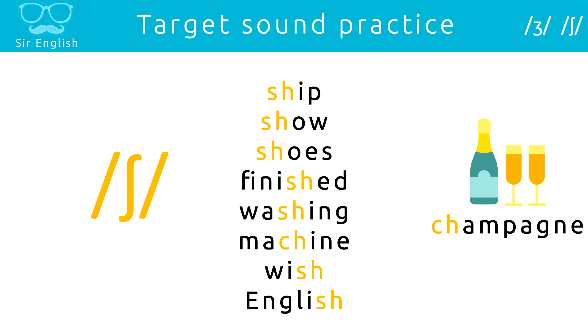Now the second sound — remember, it's the same except it's unvoiced. The mouth position and tongue position are exactly the same, except don't use your voice. Just push the air out of your mouth: SH, as in 'sheep.' Now let's look at the target sound practice list. Notice the spellings — very often the spelling is SH, but sometimes it's CH as you can see. Listen and repeat: ship, show, shoes, finished, washing machine, wish, English, champagne.